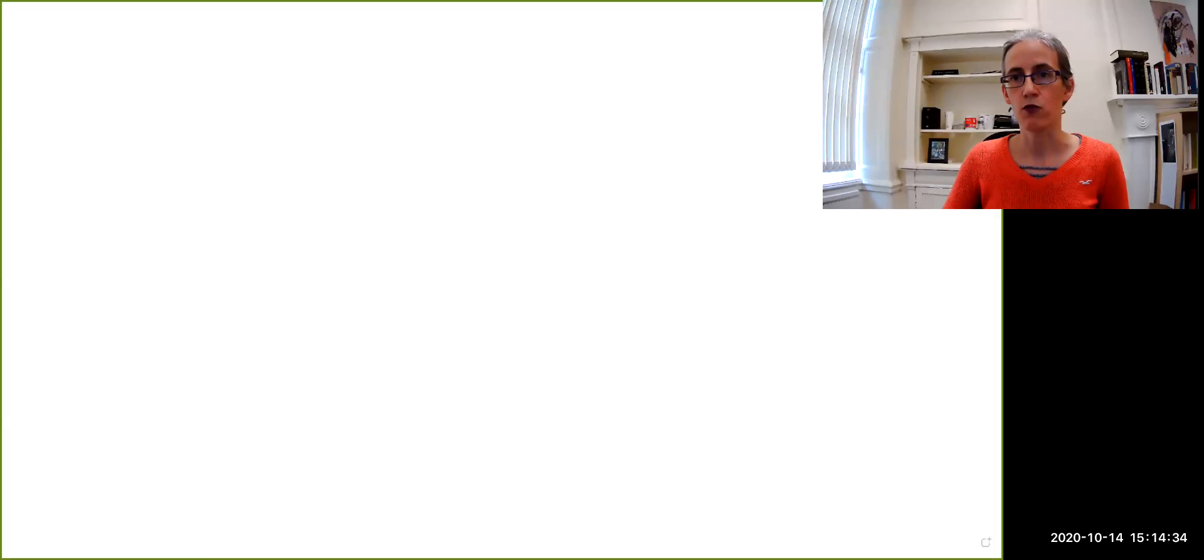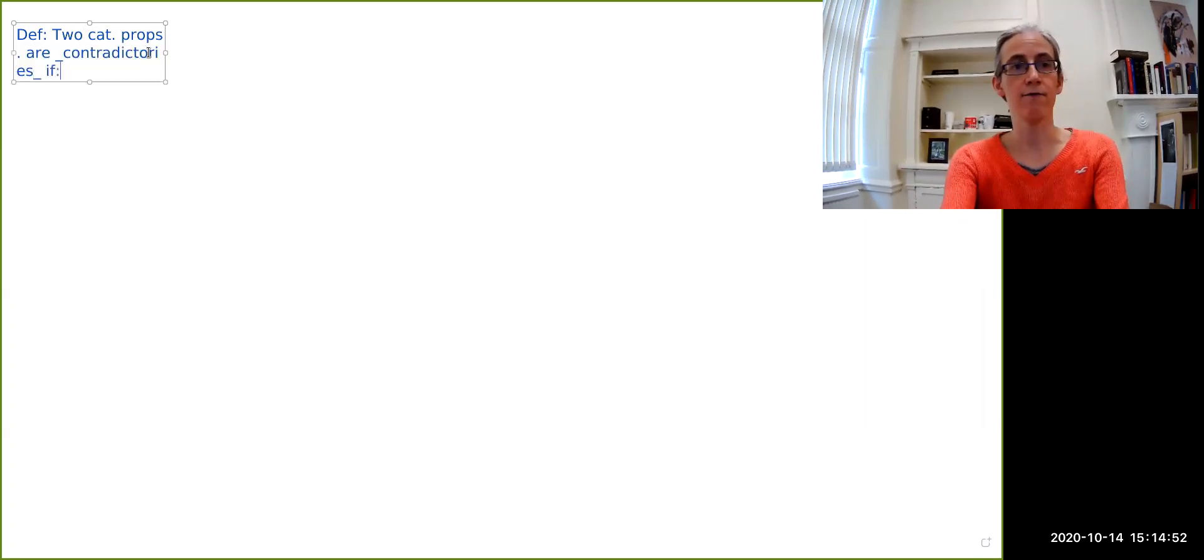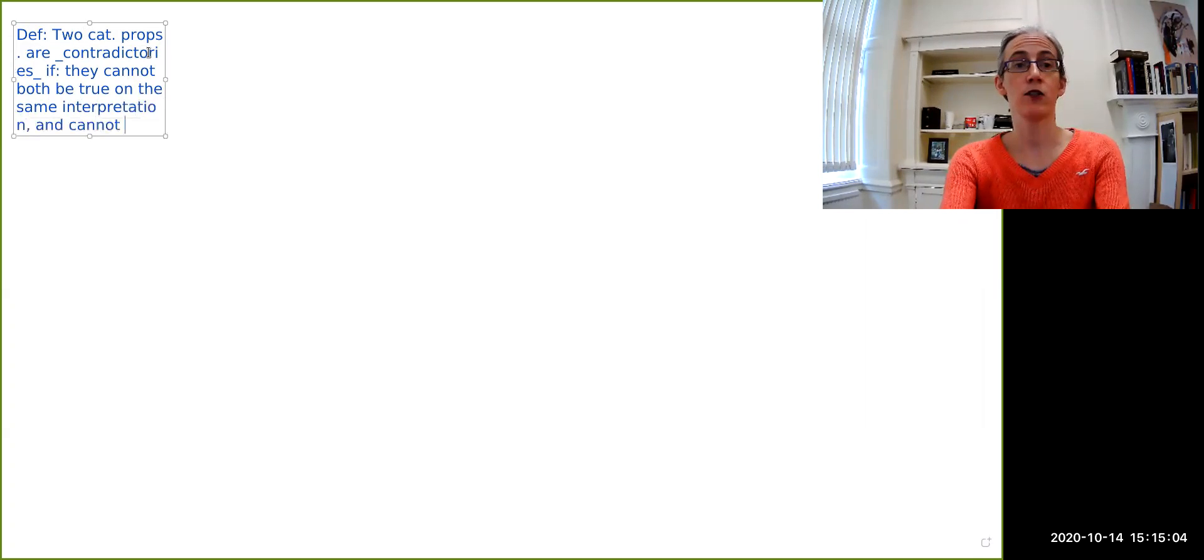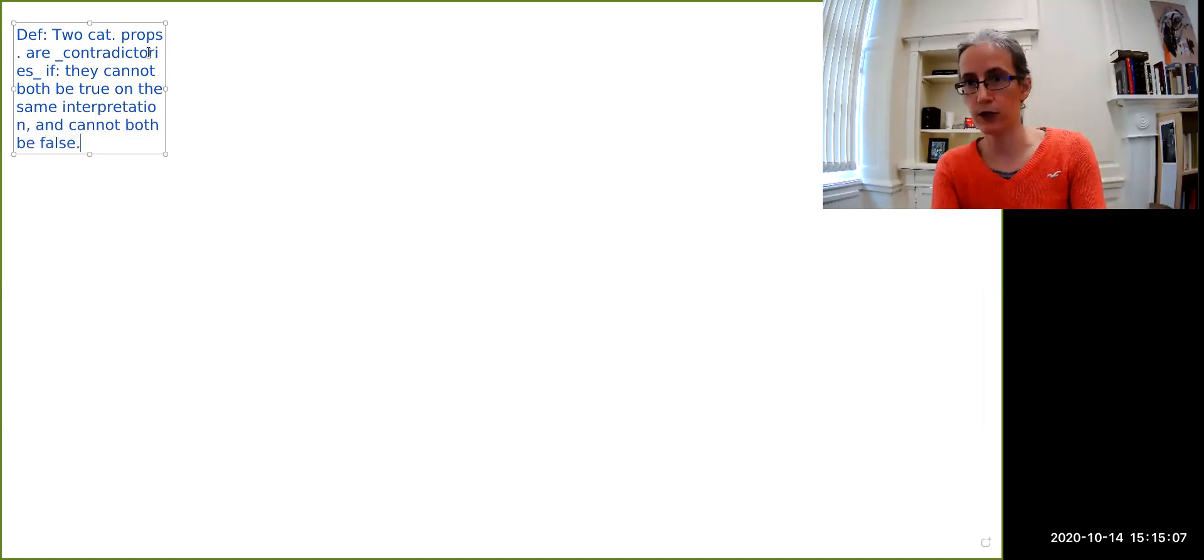Let me bring up my handy-dandy whiteboard. The first notion that I want to introduce you to or to define is the notion of contradictory pairs. Two categorical propositions are contradictories if there's two conditions here that they have to meet in order to be contradictories. They cannot both be true on the same interpretation, and cannot both be false, again, on the same interpretation.